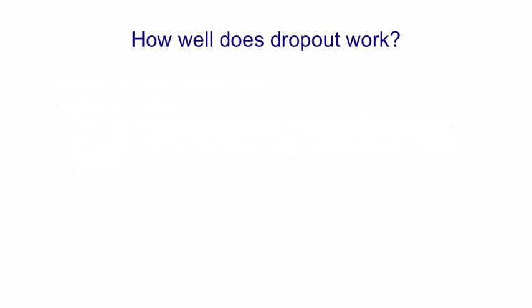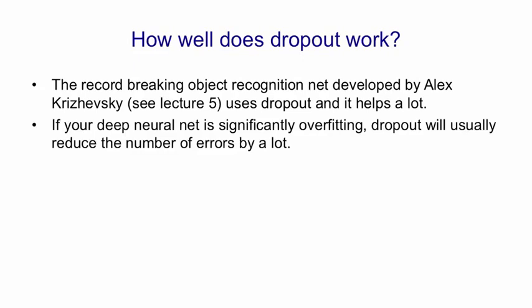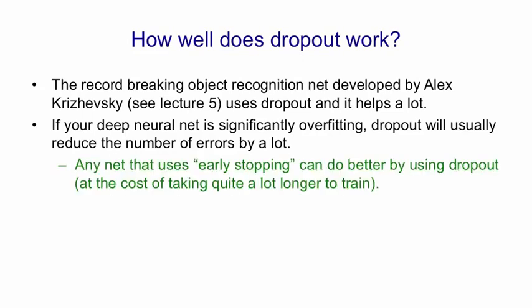So how well does dropout work? Well, the record-breaking object recognition net developed by Alex Krizhevsky uses dropout and it helps a lot. If your deep neural net is significantly overfitting, dropout will usually reduce the number of errors by a lot. Any net that uses early stopping can do better by using dropout, at the cost of taking quite a lot longer to train.